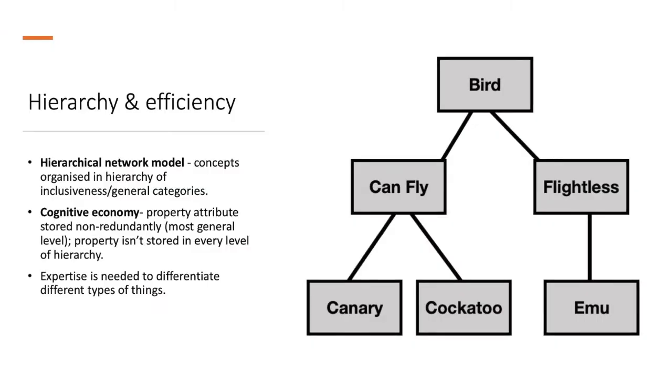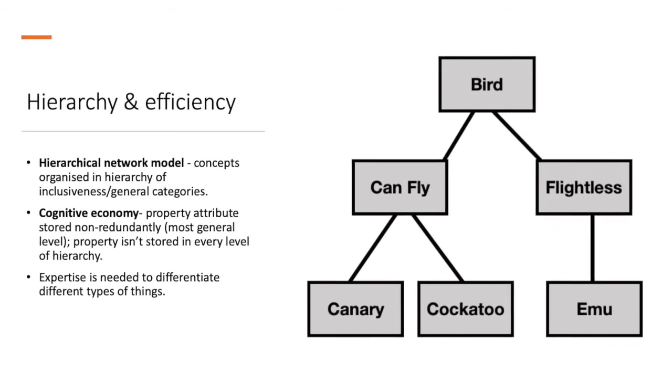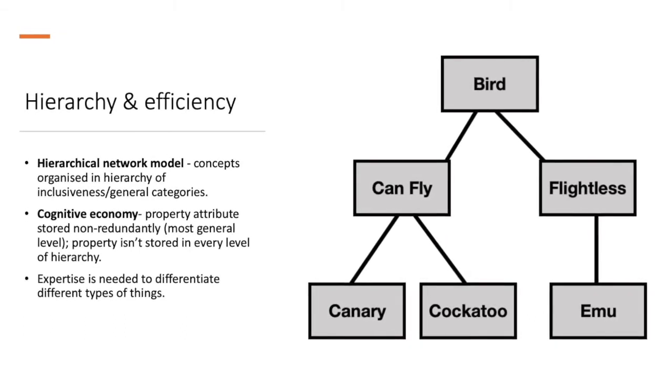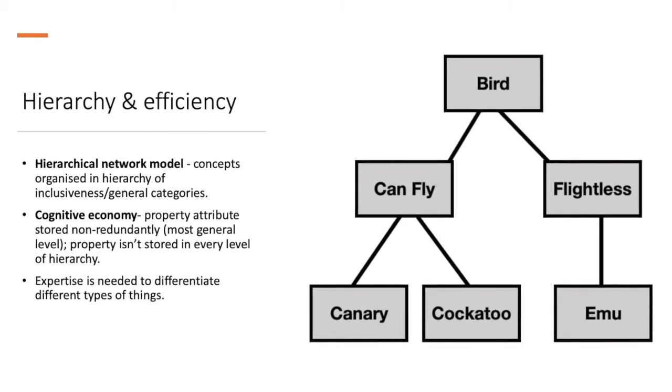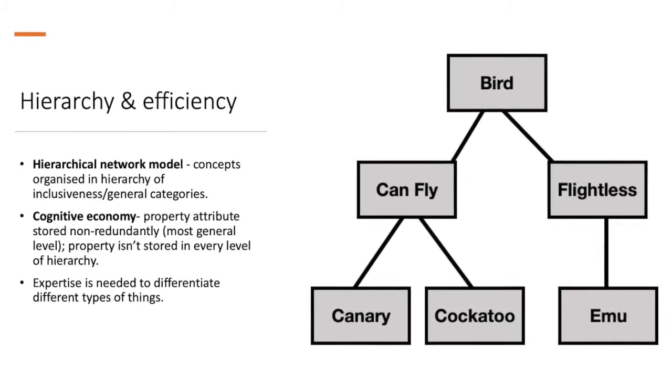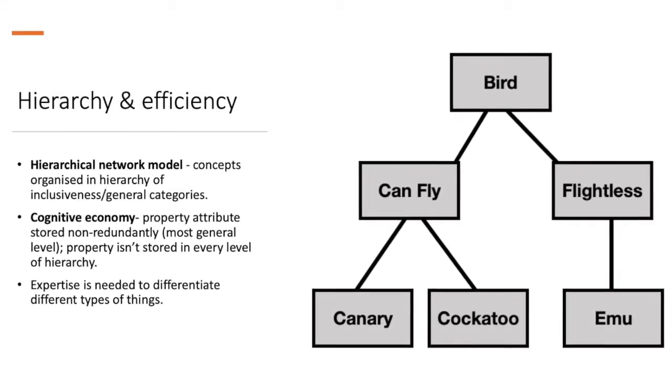Hierarchy and efficiency. Hierarchical network models are concepts that are organized in hierarchies of inclusiveness or general categories. One must also consider cognitive economy. It is a property attribute that is stored non-redundantly at the most general level. The properties are not stored in every level of the hierarchy, and thus expertise is needed to differentiate the different types of things.